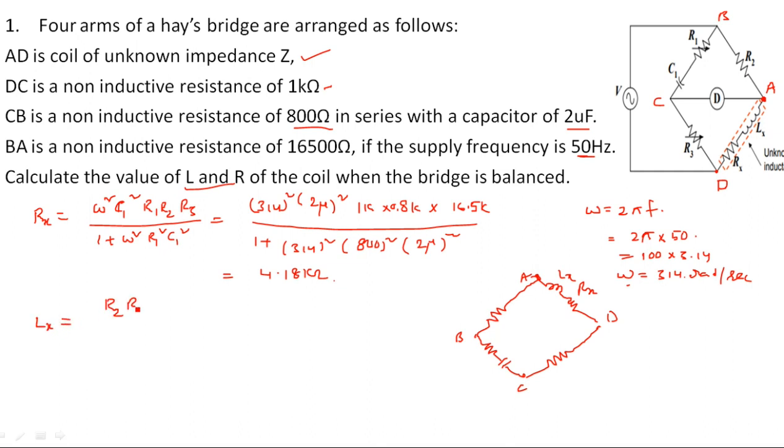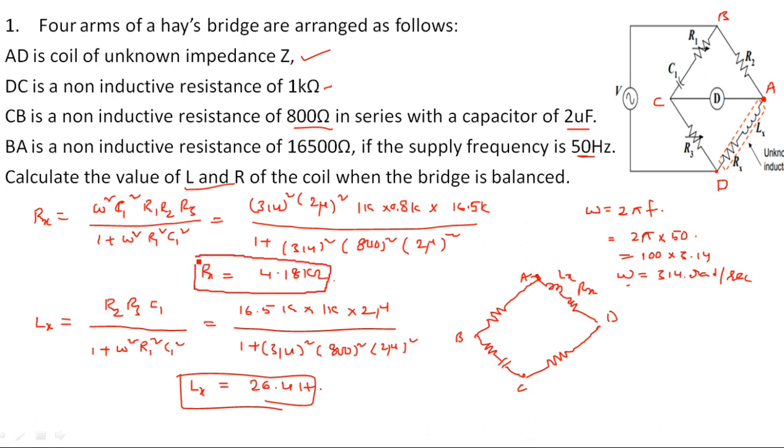And similarly, Lx is equal to R2 R3 C1 divided by 1 plus omega squared R1 squared C1 squared. That is equal to, same again substitute, what is R2? R2 is between A and B, where we have 16.5. So 16.5 kilo ohms times R3 which is nothing but CD, 1 kilo ohm, times 2 micro divided by the same denominator part: 314 squared, 800 ohm squared, 2 micro squared. So again, if you simplify this inductance value, you will get a least inductor value 26.4 Henry only. This is Lx value. This is Lx and this one is Rx.